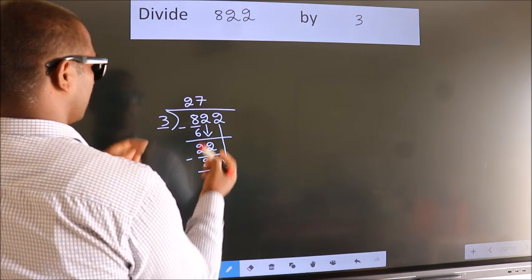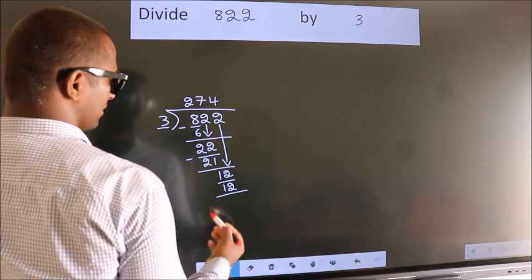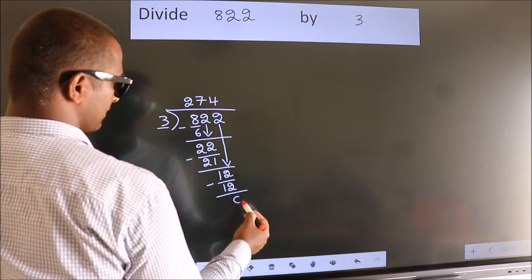In 3 table. 3 4s, 12. Now, we subtract. We get 0.